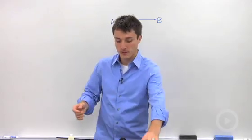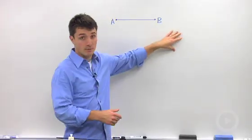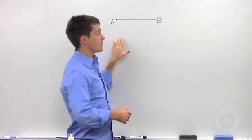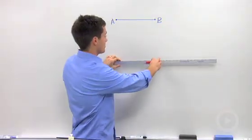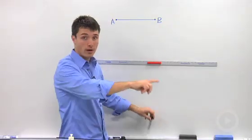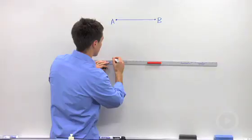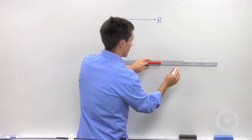The first thing we're going to talk about is how to duplicate a line segment. If I look at this line segment AB and want to create a congruent line segment, the first step is to take my straight edge and draw a ray onto which I can construct my new line segment.